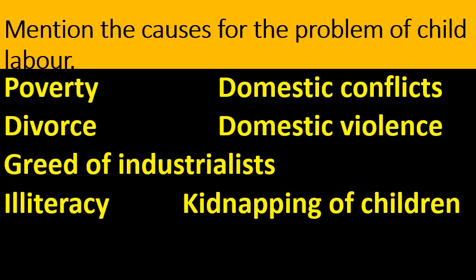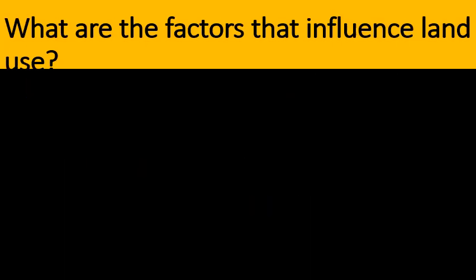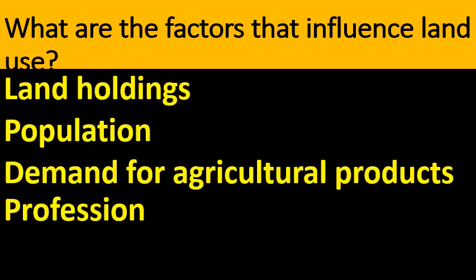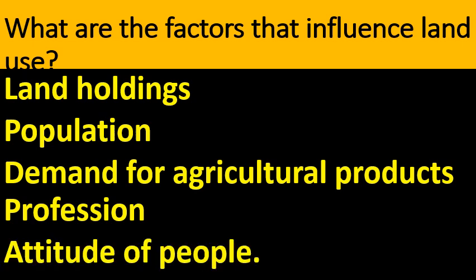Illiteracy and kidnapping of children are also causes of child labor. What are the factors that influence land use? Land holdings, population, demand for agricultural products, profession and attitude of people.